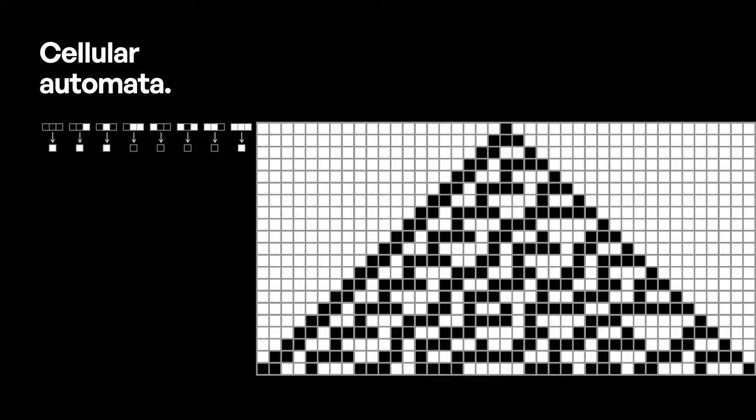So we see that the black has spread into this form of a triangle, but it's unclear what's happening inside the triangle. Let us see what happens if we run this simulation for 500 steps.